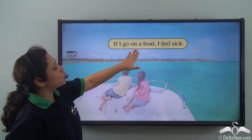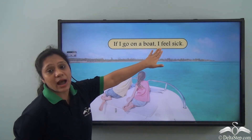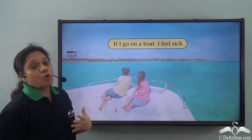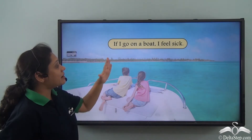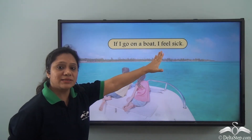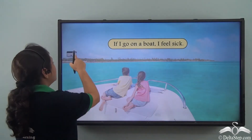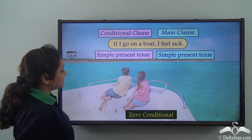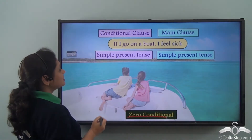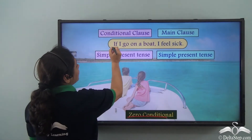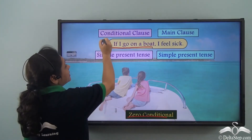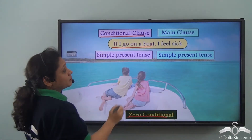'If I go on a boat, I feel sick.' What does it mean? It means that every time I go on a boat, I feel sick. So this sentence is a zero conditional sentence where 'if I go on a boat' is the conditional clause.